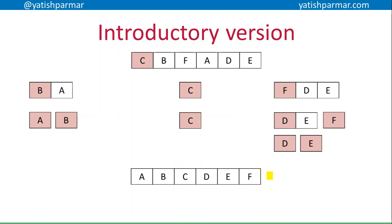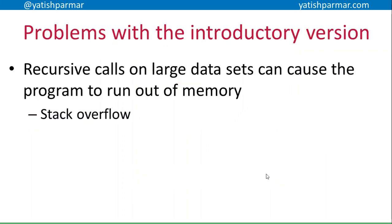This is the introductory version you see in a lot of books. The problem with it is that when you have these recursive calls on a large data set you're going to end up with a stack overflow — as you keep identifying the pivot and making a left list and a right list, then creating a new pivot with another left and right list, you will run out of memory.